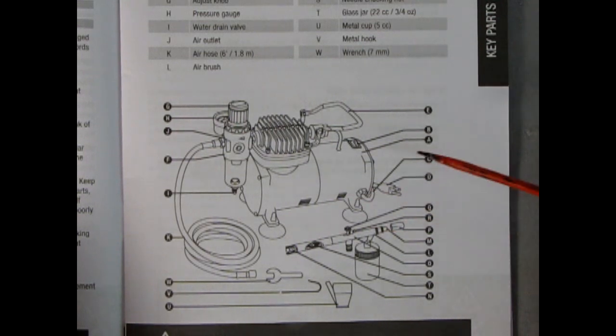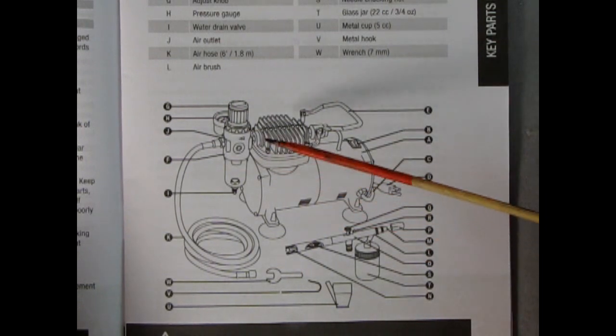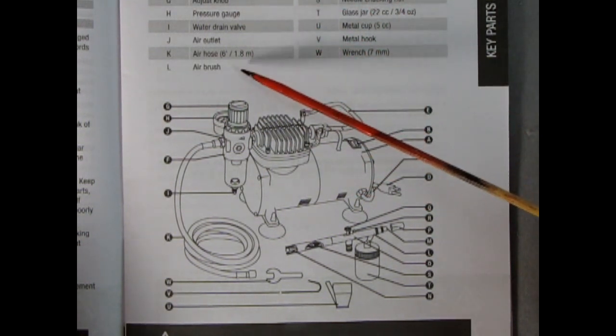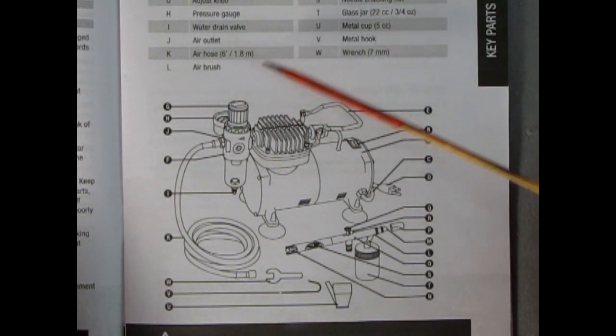Here we have an illustrated view of all the components. We have the airbrush compressor, power switch, power cord, power cord plug, handle, air filter and regulator, adjustment knob, pressure gauge, water drain valve, air outlet, and the air hose which is six feet long or 1.8 meters.